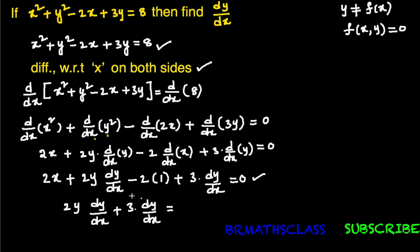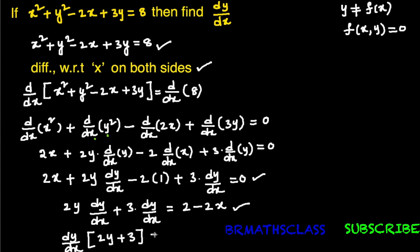All dy/dx terms are on the left side. Taking the remaining terms to the right-hand side, we now take dy/dx common from the left side. After factoring: dy/dx × (2y + 3) = 2 − 2x.